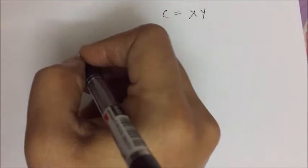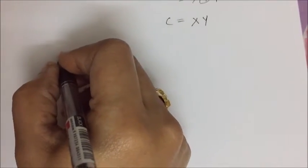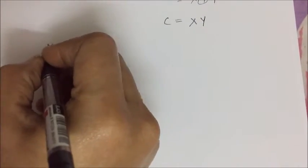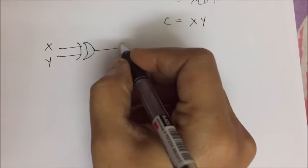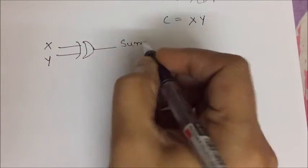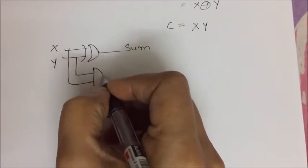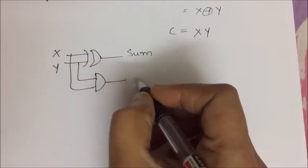So here I am giving the circuit diagram that is XOR gate for both the inputs x and y. This is sum and this AND gate will get carry.